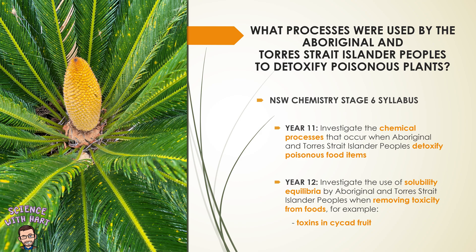We're going to look at the processes used by Indigenous Australians to remove toxins from poisonous plants. The New South Wales Chemistry Stage 6 syllabus has a dot point in Year 11 where we focus on the chemical processes used to get toxins out of a variety of different plants, leading to a variety of different food items. There are several different chemical processes that they used. In Year 12 we have a focus on solubility equilibria, which links nicely with just one of these chemical processes, and we're looking at a variety of foods and therefore a variety of plants.